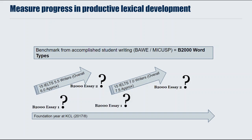Common word types would be things like 'place' or 'forget' — very, very common words. Anything less frequent — going into academic-type language, technical language, or just less frequent vocabulary — I counted as beyond 2000.